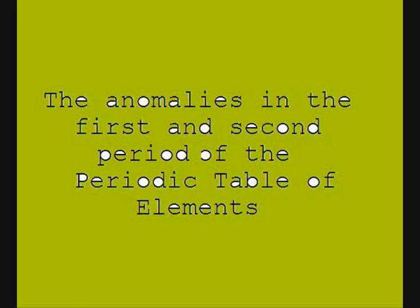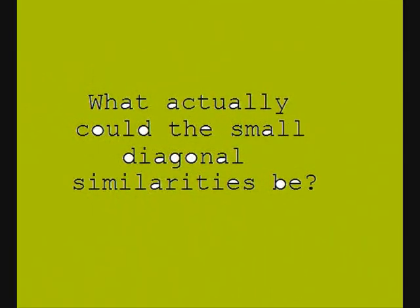The abnormalities of the first and second period of the Mendeleev's Table of Elements. Two or three days ago, when I was reading an article in a book, I saw a very interesting thing about the similarities between an element and another in the immediate lower right vicinity of the first. Small diagonal similarities, they are called.